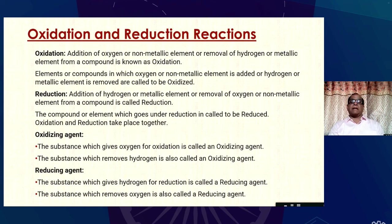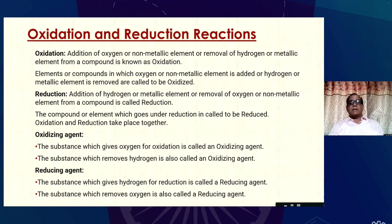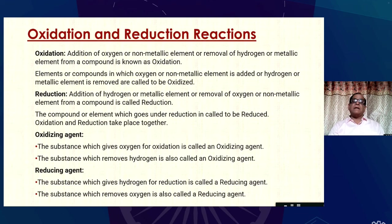Elements or compounds in which oxygen or a non-metallic element is added, or hydrogen is removed, undergo oxidation. Reduction: the addition of hydrogen or a metallic element, or the removal of oxygen or a non-metallic element from a compound is called reduction. The compound or element which undergoes reduction is said to be reduced. Oxidation and reduction take place together. The substance which gives oxygen for oxidation is called an oxidizing agent, and the substance which removes hydrogen is also called an oxidizing agent. The substance which gives hydrogen for reduction is called a reducing agent, and the substance which removes oxygen is also called a reducing agent.